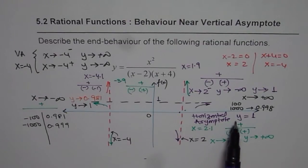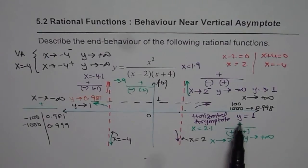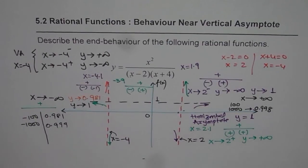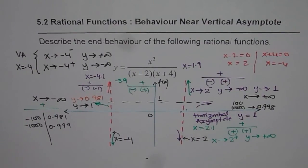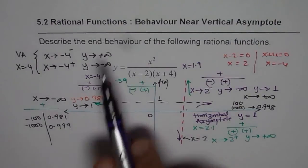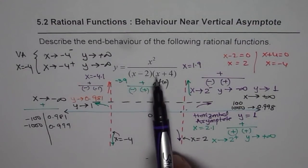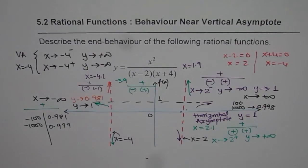So that is how we find the behavior of the graph near vertical asymptotes and the end behavior. Note that not all rational functions have horizontal asymptotes. Sorry about the mess on the paper, but if you follow the sequence you can understand what we are trying to say. Thank you and all the best.